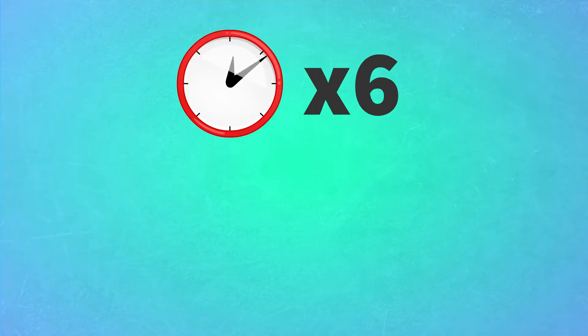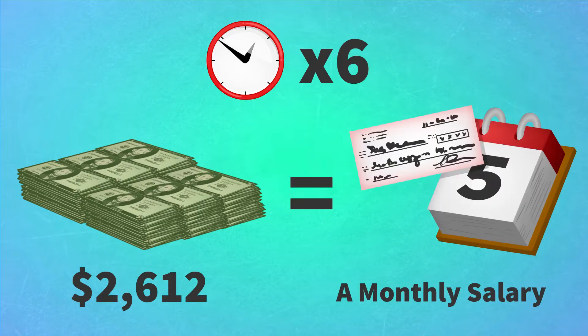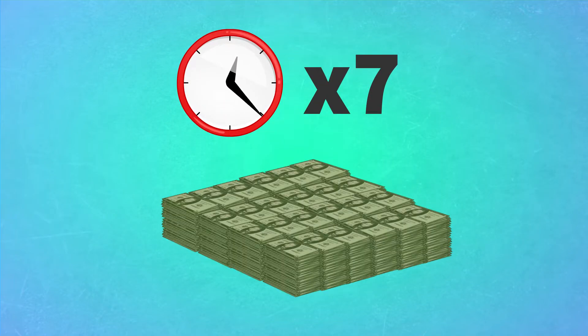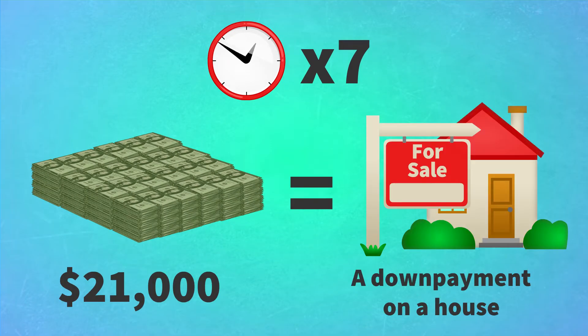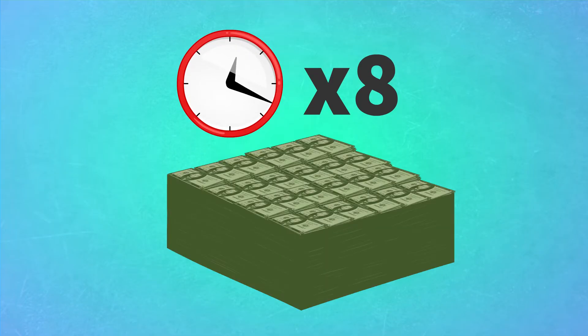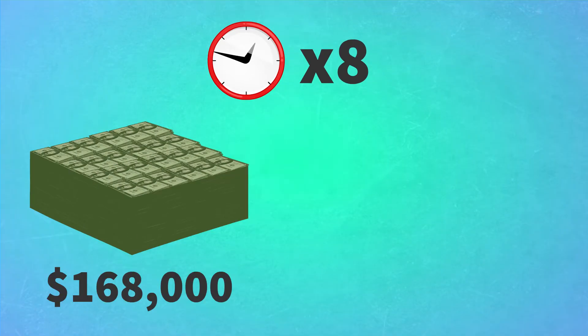At six hours, you have more than two thousand six hundred and twelve dollars, a modest monthly salary. At seven hours, you have almost twenty-one thousand dollars, a down payment on a small house. At eight hours, you have almost one hundred and sixty-eight thousand dollars, so buy that house.